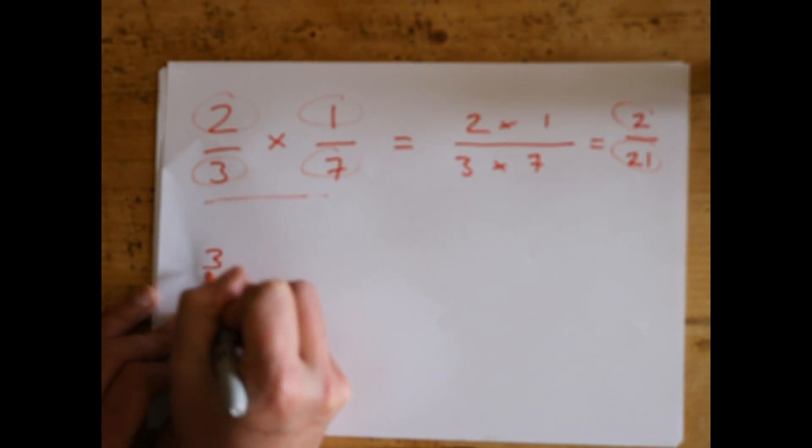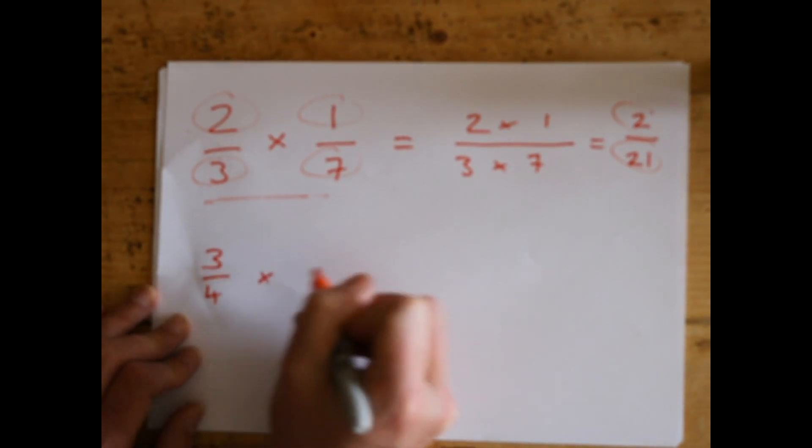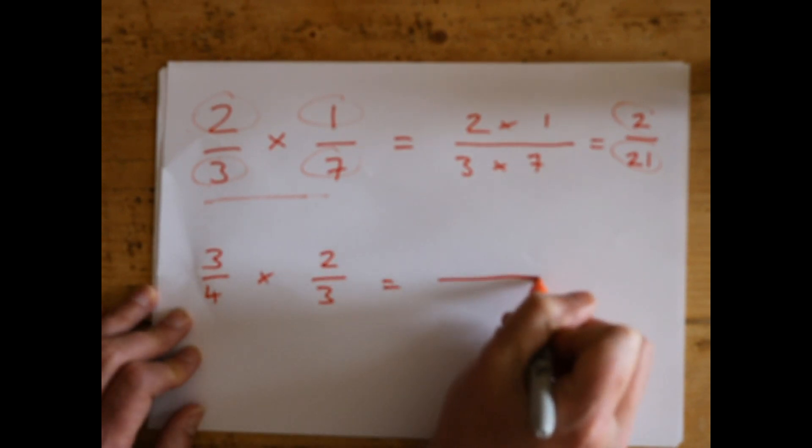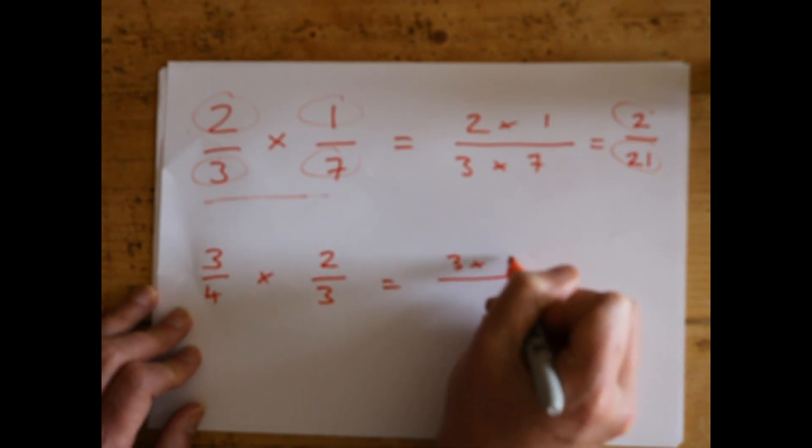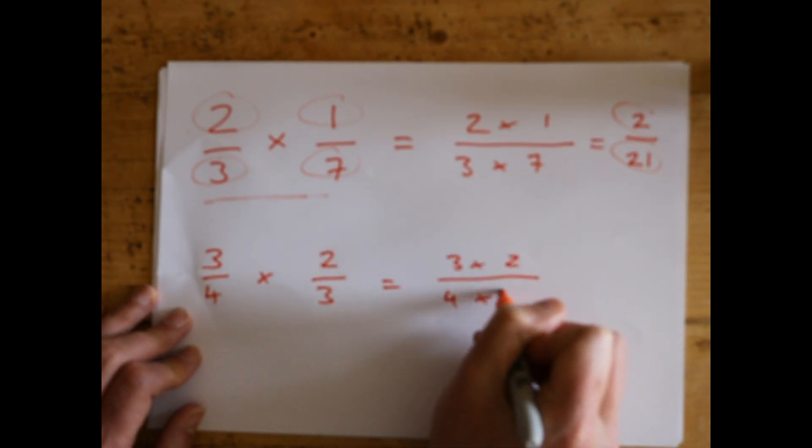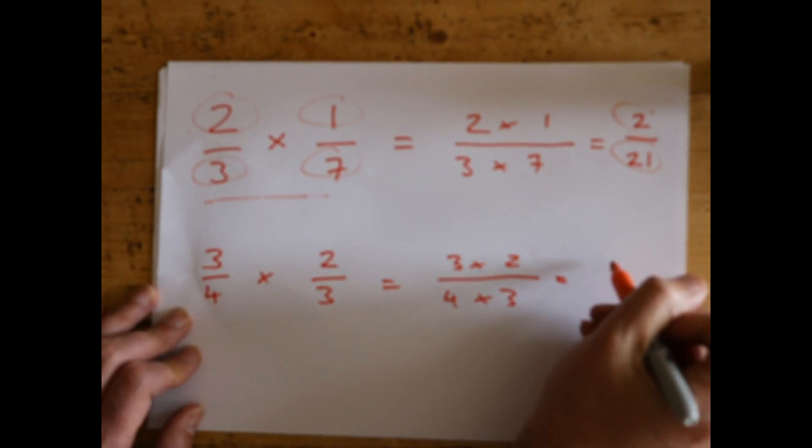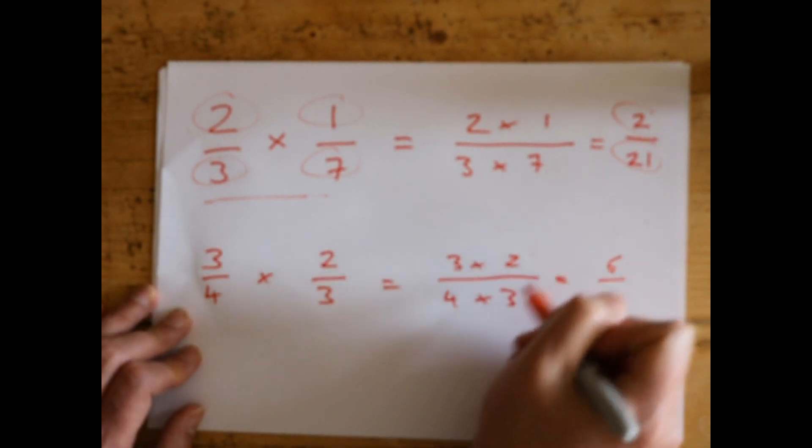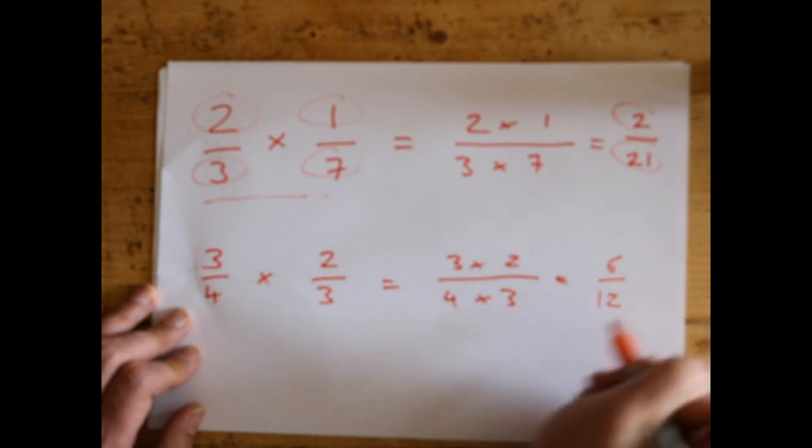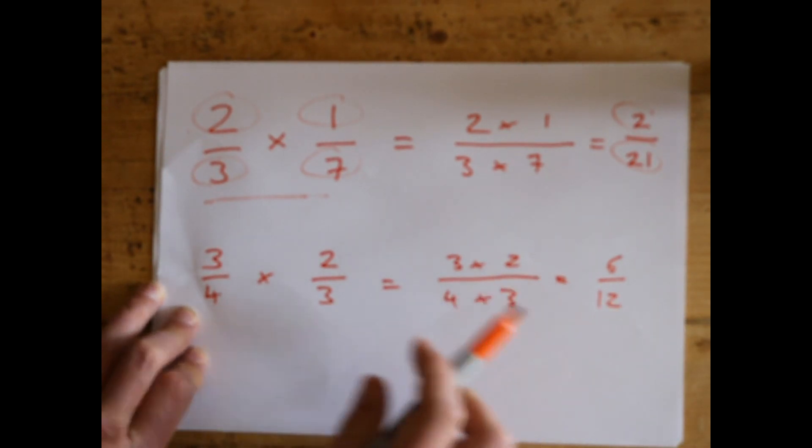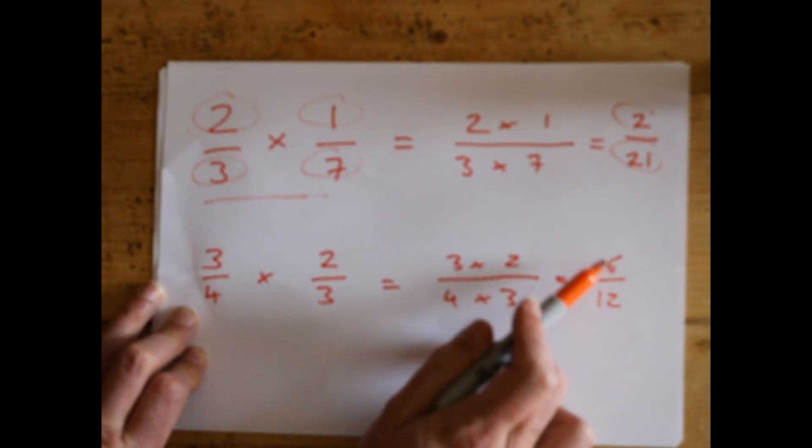Let's do another quick one, a bigger one: 3/4 times by 2/3. We do the big long line at the top like this and at the bottom like this. So again, just times the tops, times the bottoms. Dead easy - making a meal of this really. Three times two is six, four times three is twelve.